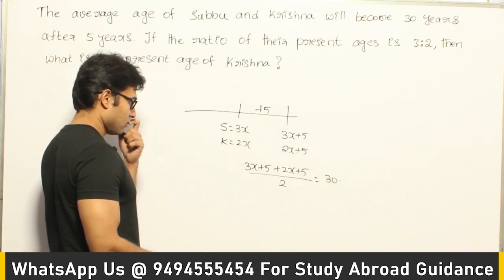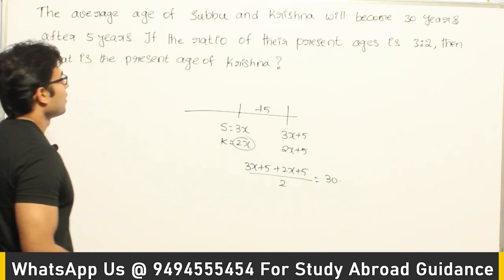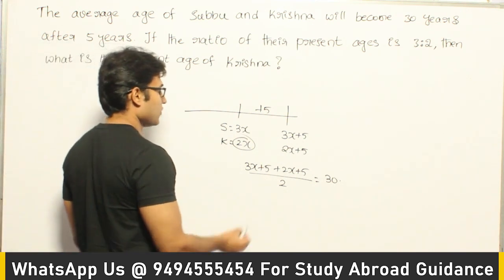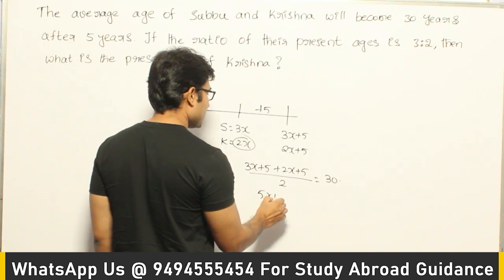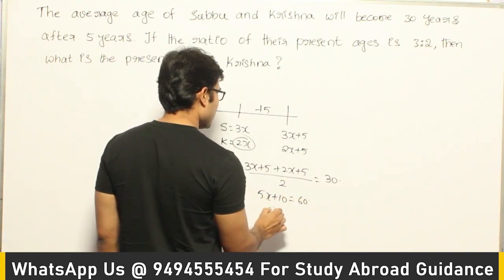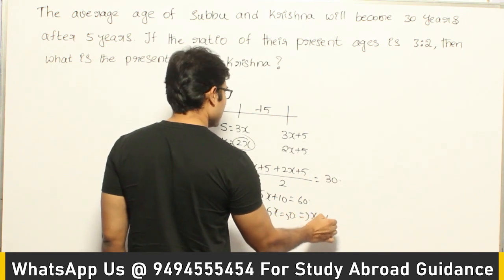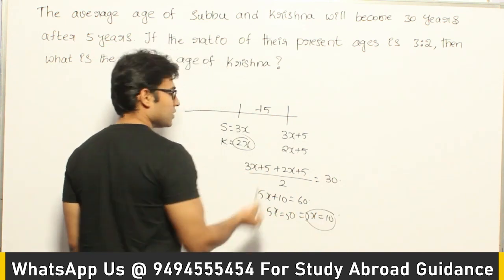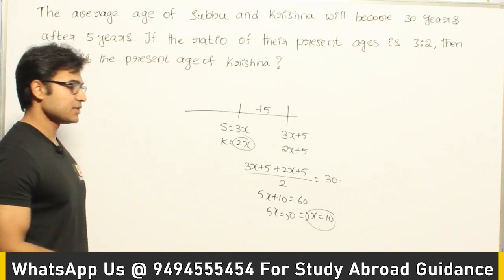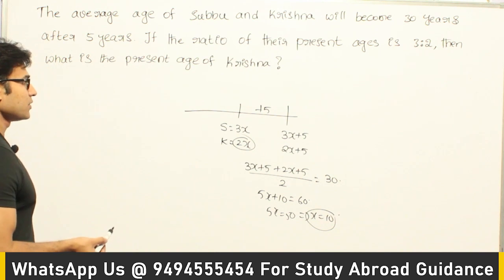Now we find the value of x, from which we can find Krishna's current age. It gives us 5x + 10 = 60, so 5x = 50, which means x = 10. Since x = 10, substituting that value gives Krishna's age as 2x = 20... So Krishna's present age is 20. Now what is the other way of solving it?